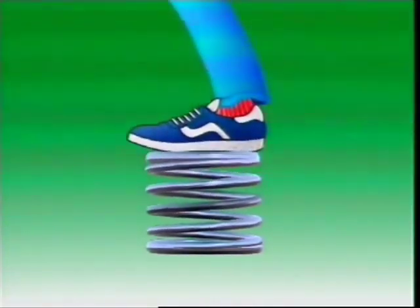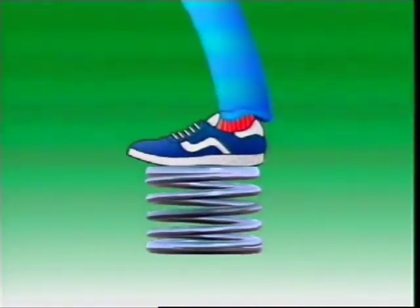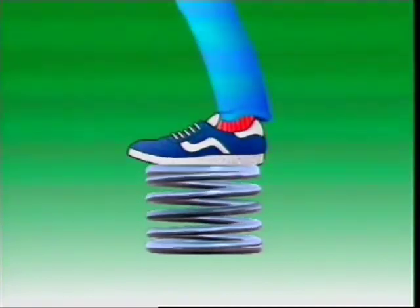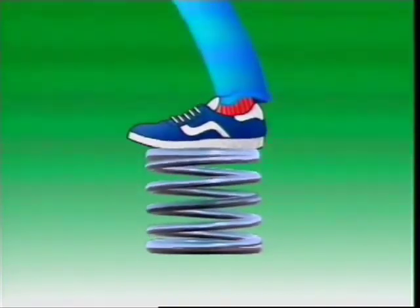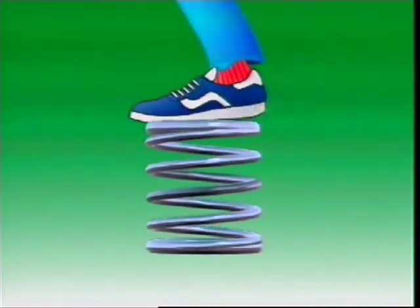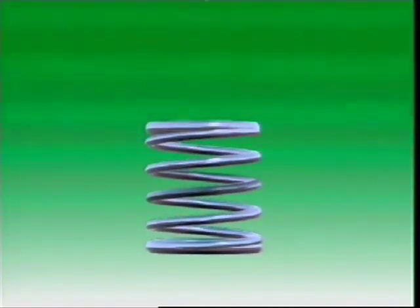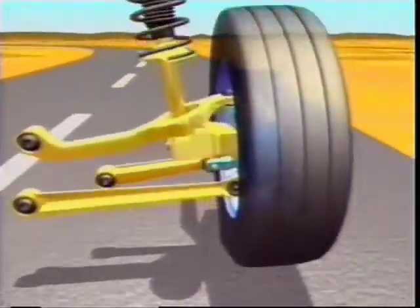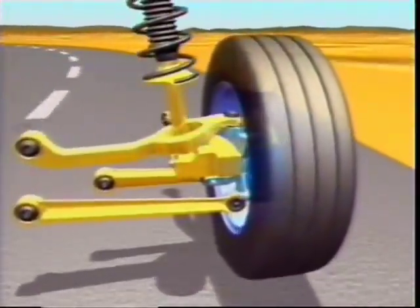Applying a force to an object deforms it. Removing the force lets it return to its original shape. This characteristic is called elasticity. Automotive suspension systems generally use the elastic properties of metals to provide the springing medium.